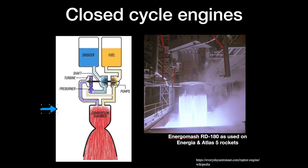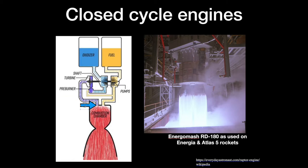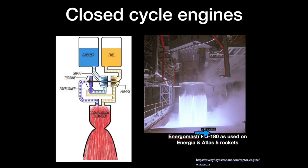How can we improve on an open cycle engine? By making a closed cycle engine. In a closed cycle engine, the exhaust out of the little turbine engine is not dumped overboard — it goes right into the combustion chamber, and that way it can go through the combustion chamber and the engine nozzle to produce thrust. Both the Space Shuttle main engine and some Soviet engines are exactly this kind of engine. For example, here is an Energomash RD-180 engine on a test stand. This engine is actually used not just by Soviet or Russian rockets — it's also used by the Americans on the Atlas V rocket. It is a really good engine with very high performance.